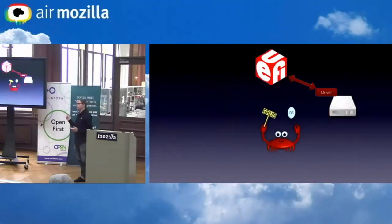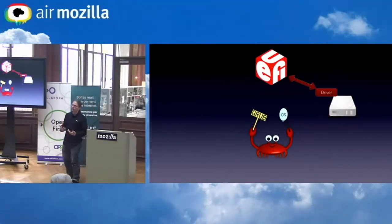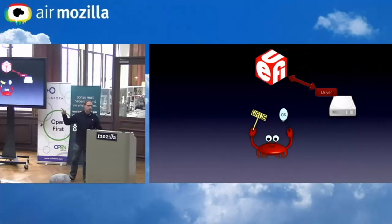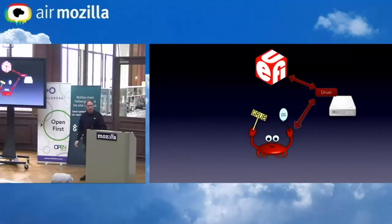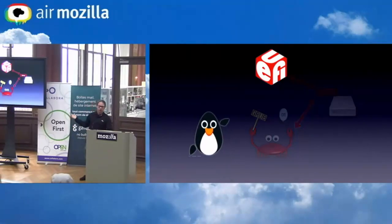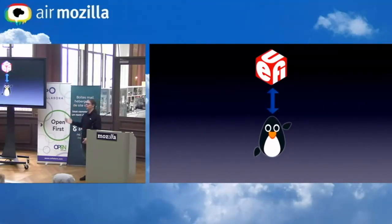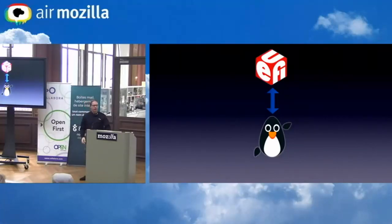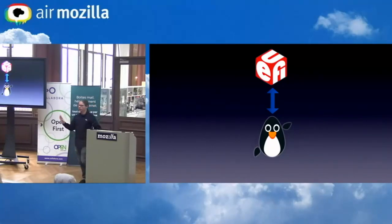An application like GRUB — there's a GRUB UEFI variant — can call UEFI to get a handle for a disk drive, then use that handle to actually access the drive and load Linux. Linux then calls UEFI, says 'please go away, I don't need most of you now,' removes most of firmware, and then you live in the Linux world. That's UEFI in a nutshell.